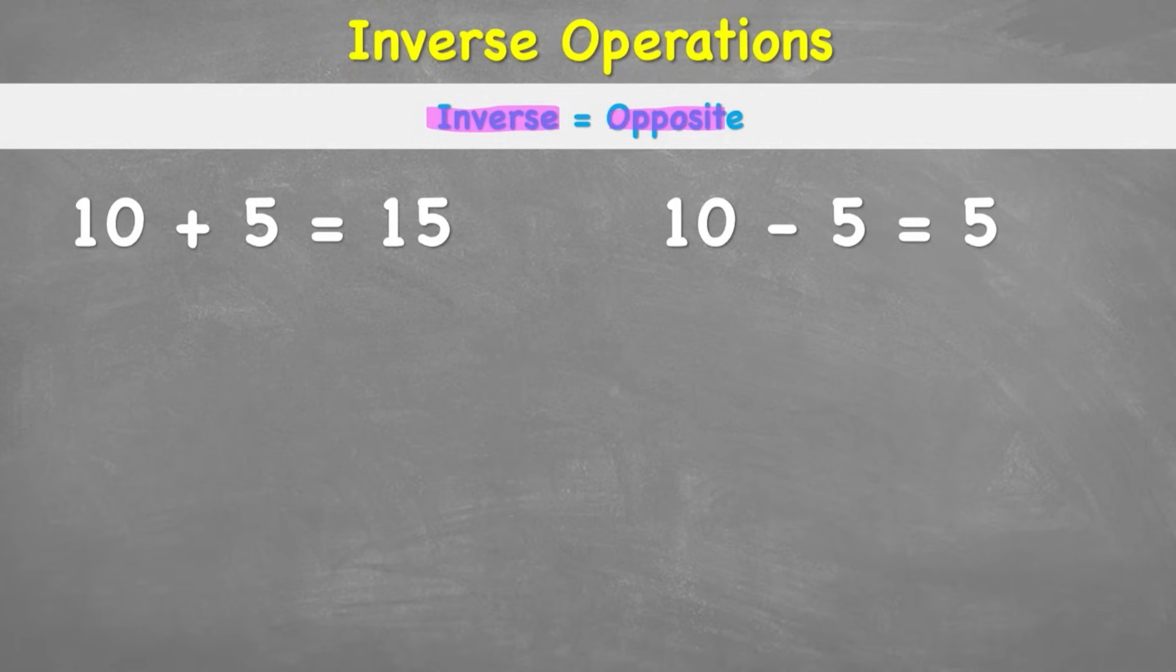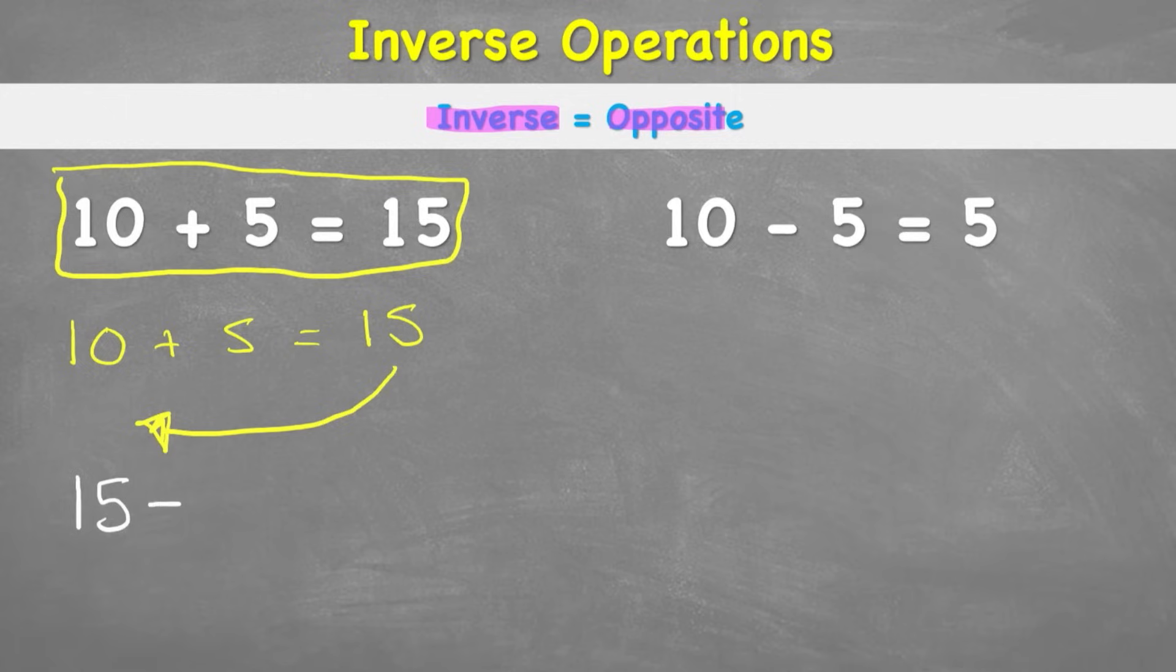Let's have a look with this first example here where we have 10 plus 5 equals 15. We could have 10 plus 5 equals 15, or we can do the inverse which means we come backwards. So let's rewrite our question as 15 take away or subtract 5 equals 10.